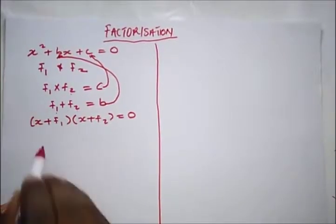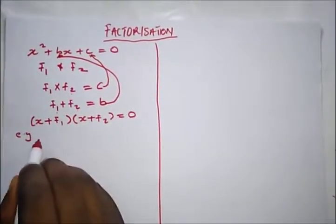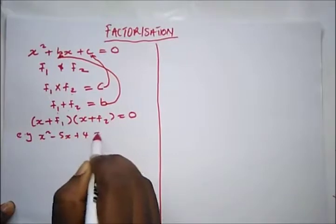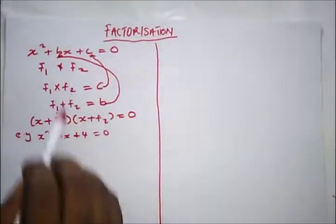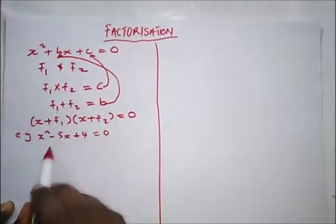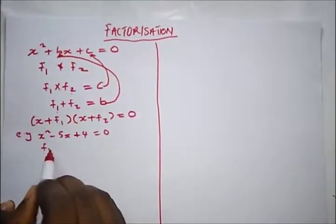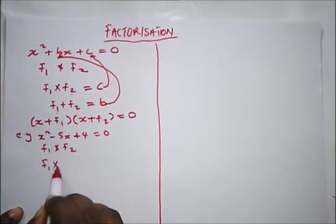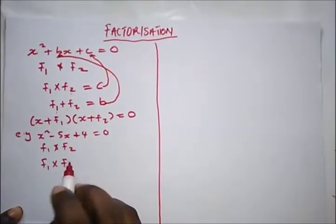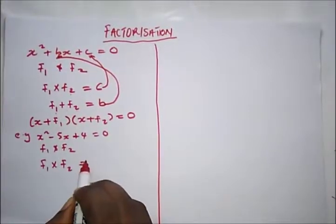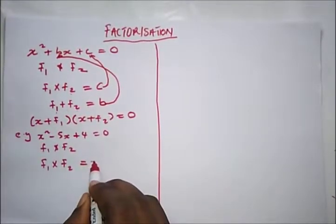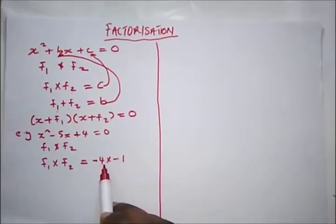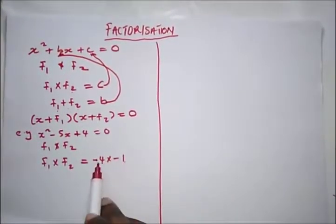Let me give you an example. We're going to be treating several past questions on GCE and WAEC on factorization. To explain this example, we need two factors f1 and f2. When we multiply them, they must be equal to +4. So here we have minus 4 times minus 1.